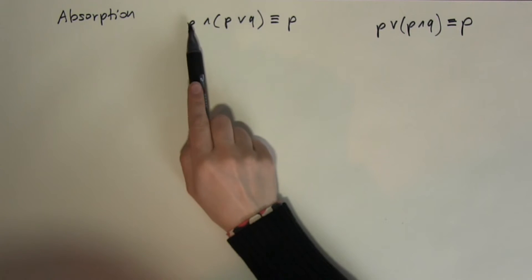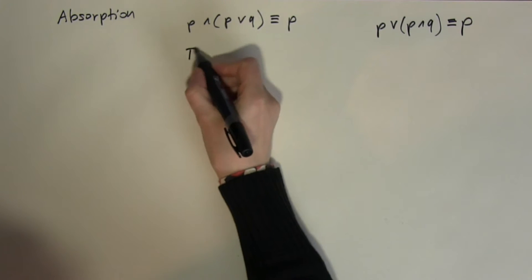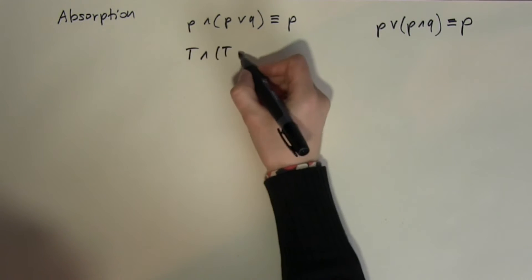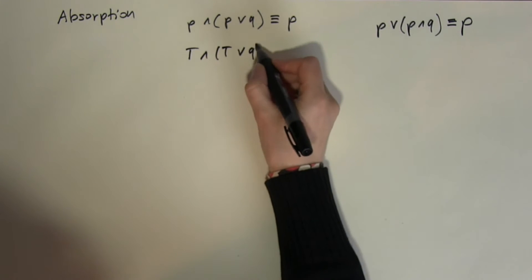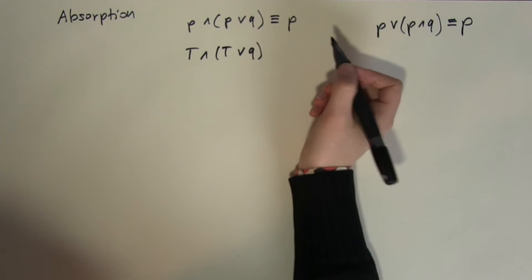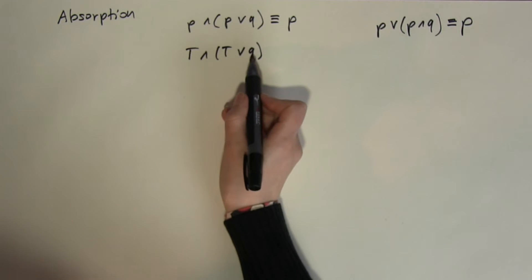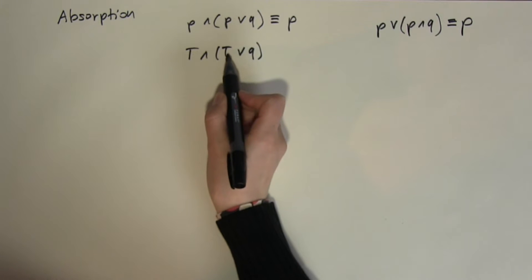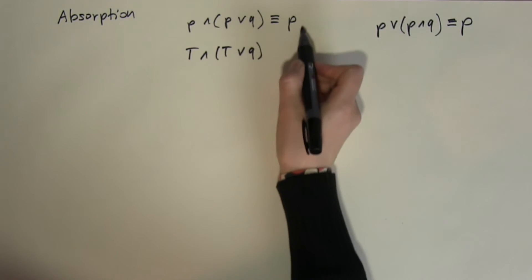So if P is true then what I have here is true and true or Q. Now true or Q, it doesn't matter what Q is, it's always going to be true because I have got a true in here. And true and true is always true. So that gave me P back.